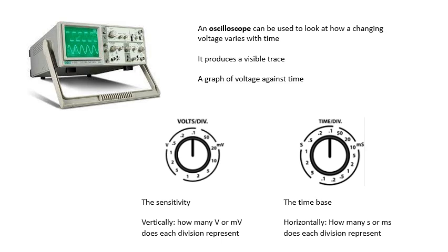An oscilloscope gives you a graph of voltage against time. There's loads of switches and knobs, but you only need to know two: the sensitivity and the time base. The sensitivity is volts per division, and that is vertical. So vertically, how many volts do you need to make the dot go up one division? It could be 0.1 volts per division or 20 millivolts per division. The sensitivity is vertical.